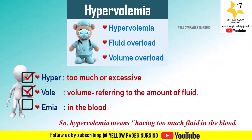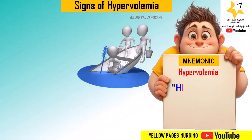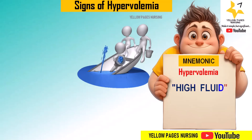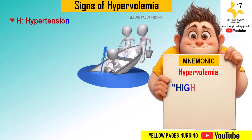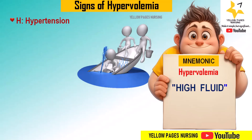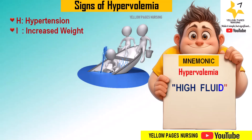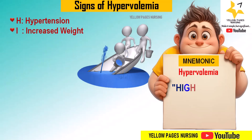Now, the common signs of fluid overload — that is, hypervolemia — can be remembered using the short mnemonic 'HIGH FLUID.' Each first letter stands for a different sign. H stands for hypertension, that is increased blood pressure due to excess fluid in the blood vessels. I stands for increased weight — sudden, rapid weight gain due to fluid retention.